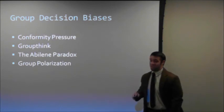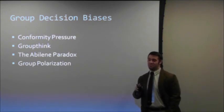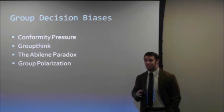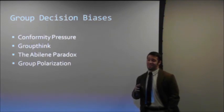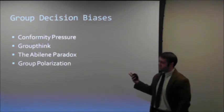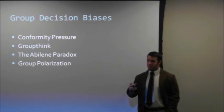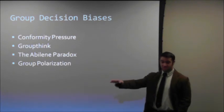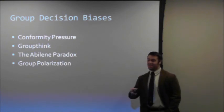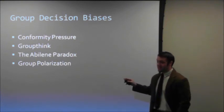Group polarization. Polarization is an incredibly dangerous phenomenon. In groups, we tend to come to more extreme decisions than we might actually necessarily have as individuals. Whether it's more risky or more cautious, groups tend to feel more strongly about issues than individuals. Risky shift is another name for it, as is cautious shift.